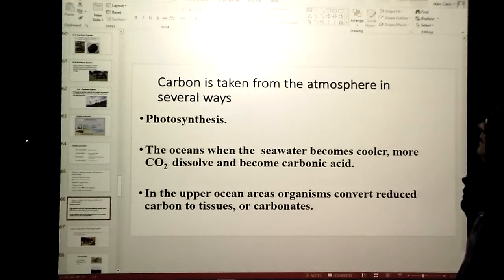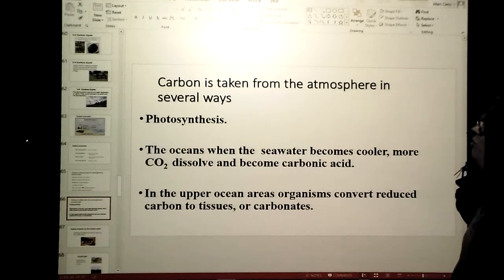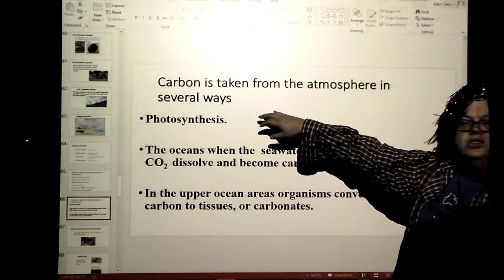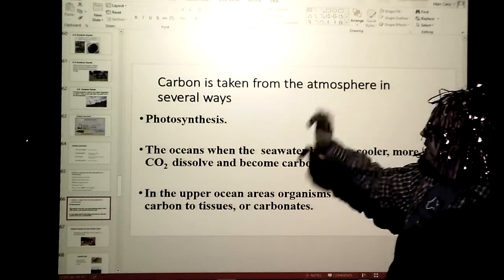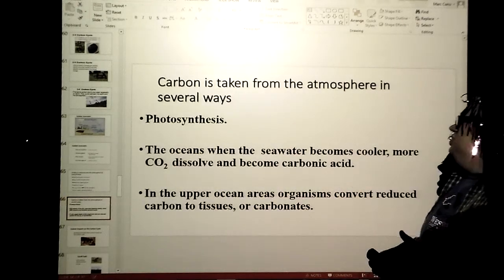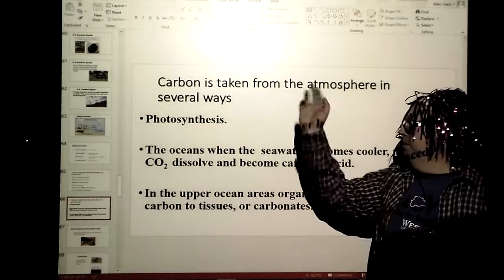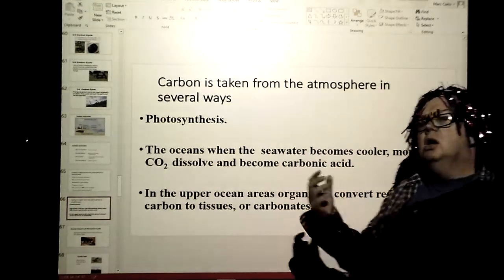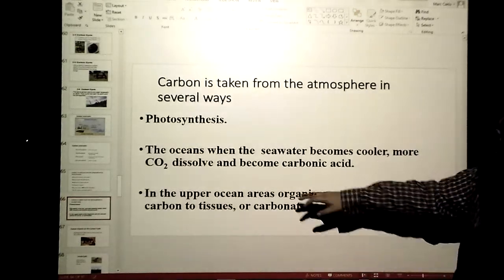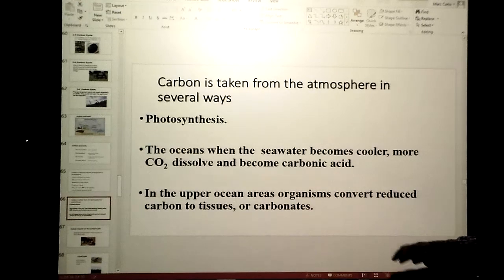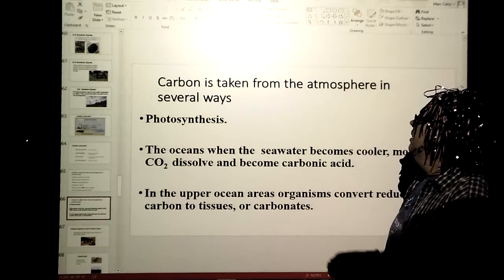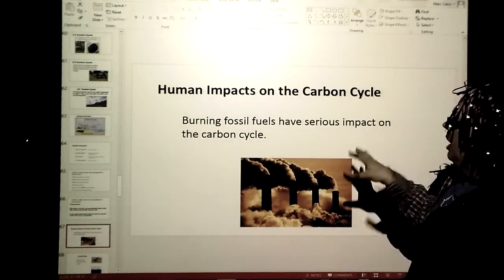Carbon can be removed from the atmosphere in some different ways. Photosynthesis is an obvious one - don't think just plants, think phytoplankton. The oceans - here's the thing: when the seawater temperature goes down, you get more carbon dioxide dissolving and it becomes carbonic acid, so there's some chemistry right there for you.